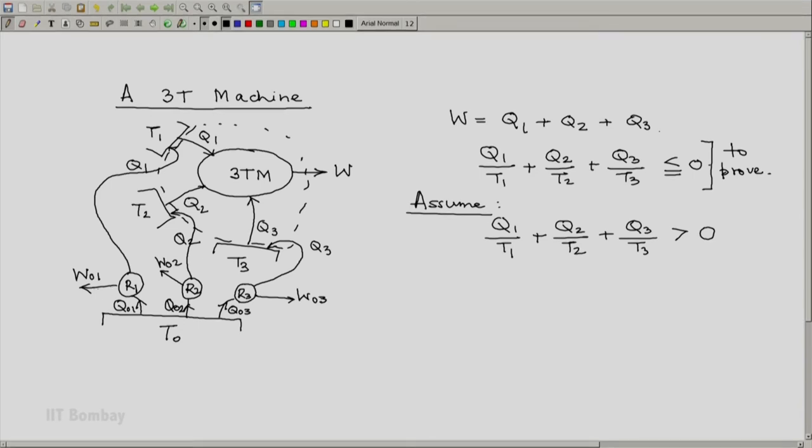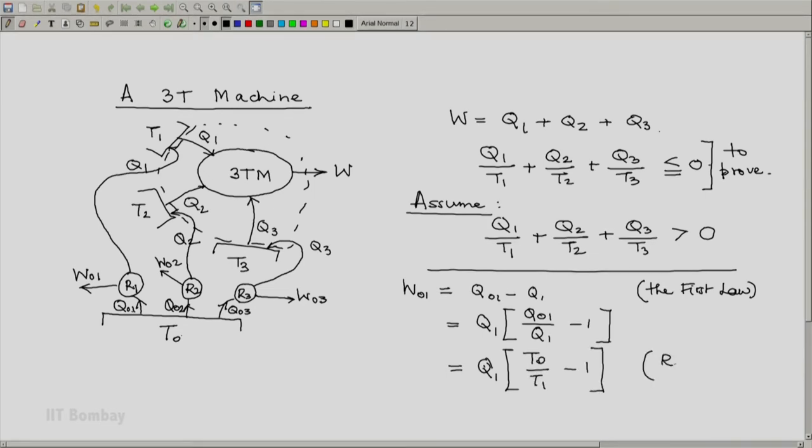Let us look at what W01 will be. W01 equals Q01 minus Q1 by first law. Then let us write this as Q1 times (Q01/Q1 minus 1). Because the machine R1 is a reversible 2T machine, Q01/Q1 can be written as T0/T1. So W01 equals Q1 times (T0/T1 minus 1).